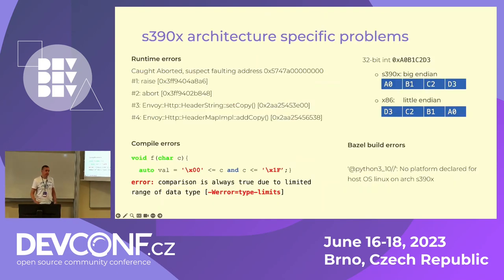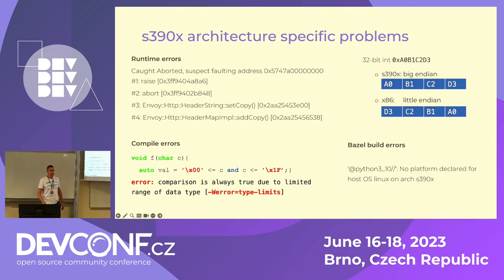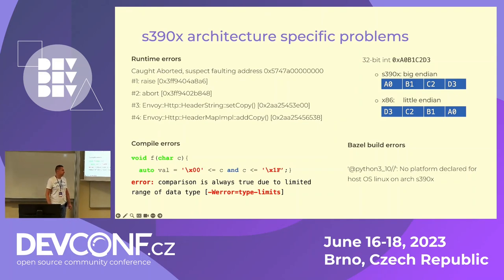So what is the s390x platform? s390x is a Linux operating system compiled to run on IBM mainframe computers. There are situations where code compiled on x86 just works, but when trying to compile and run that code on s390x it crashes. The most frequent reason for such crashes is different endianness — the order of bytes in computer memory. s390x is big-endian while x86 is little-endian.